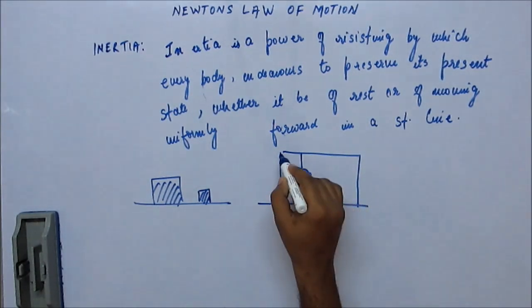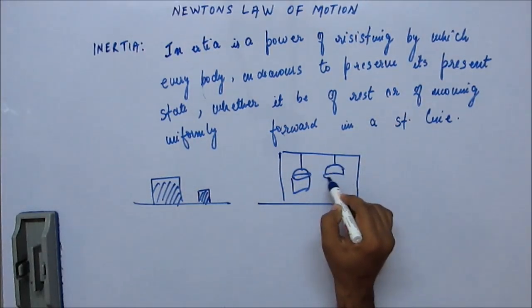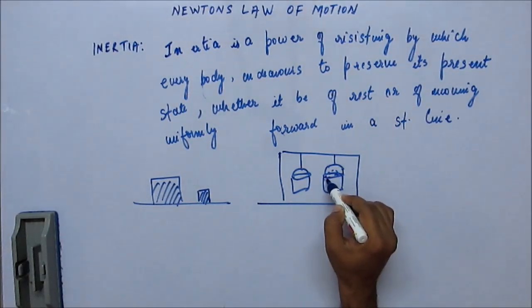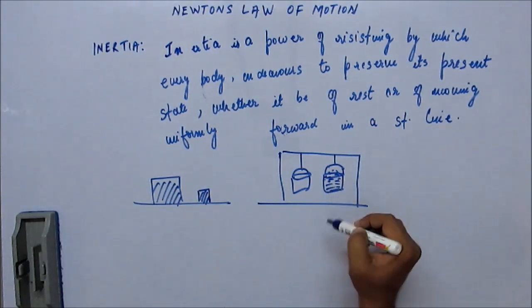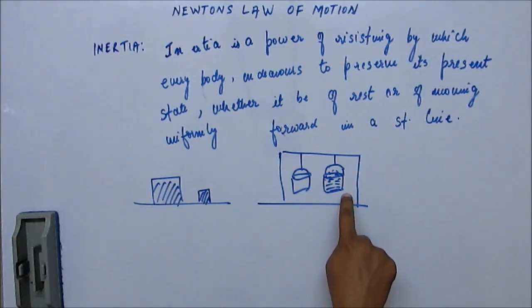Similarly, suppose there is an empty bucket hanging like this and there is a bucket full of sand. Then, to bring the lighter bucket in swing, it will require less endeavor from our side. But to swing this one, it will require a lot more amount of energy compared to this.